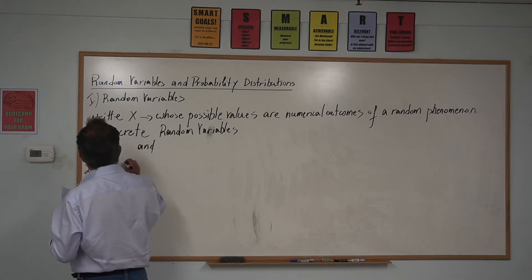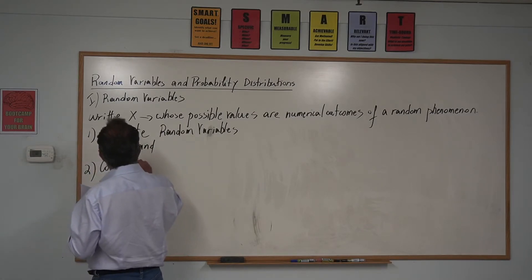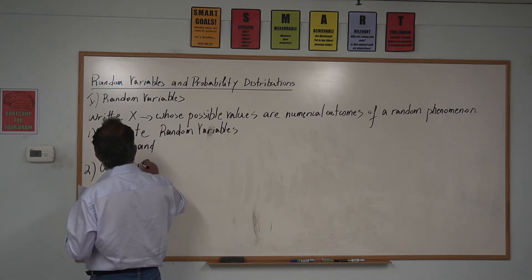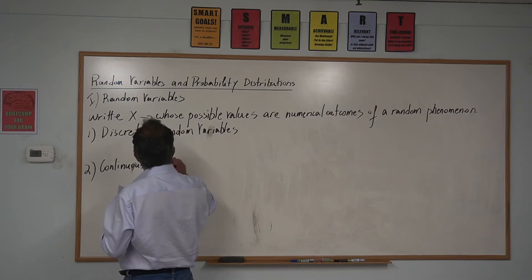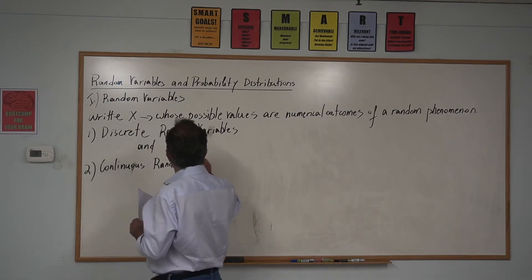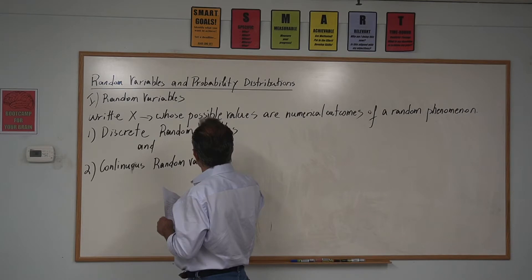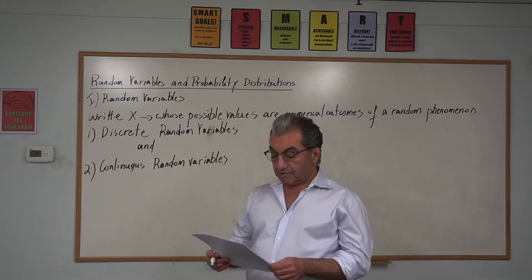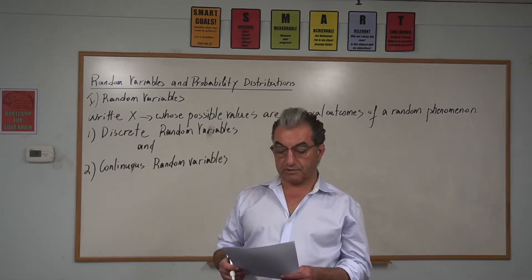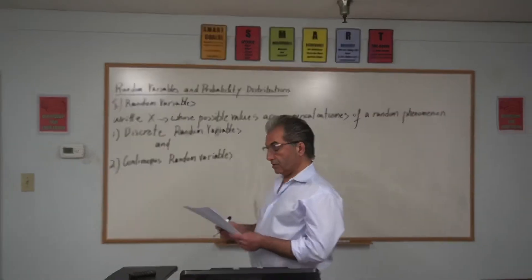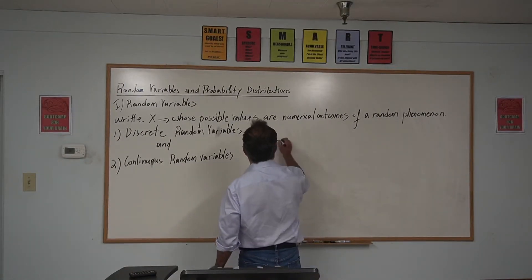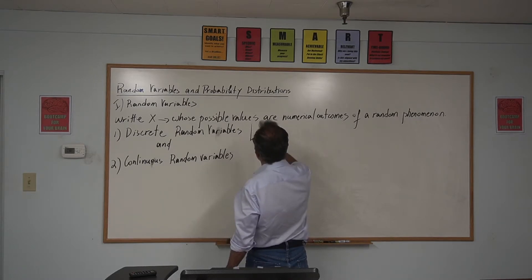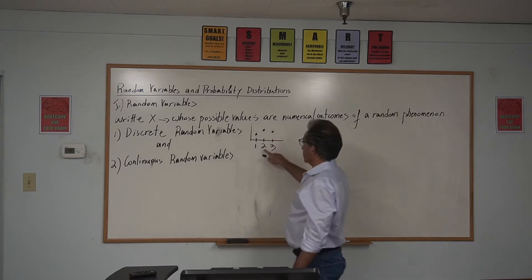And number two, we have continuous. What are discrete random variables? These are countable numbers, like one, two, three. If I graph it, you pick one, then you pick two, then you pick three — you don't pick anything in between.